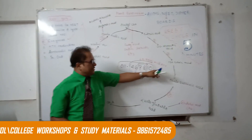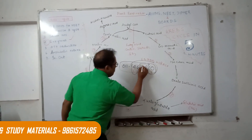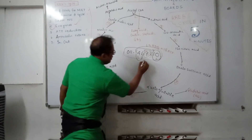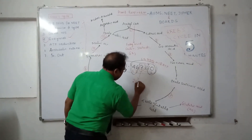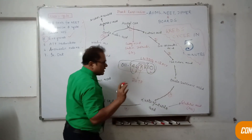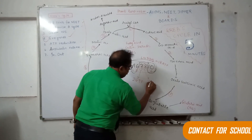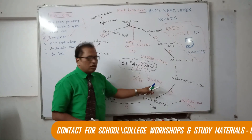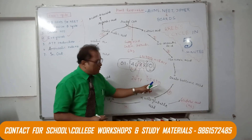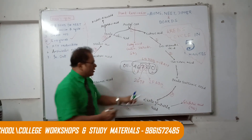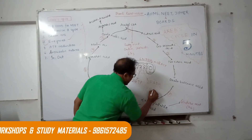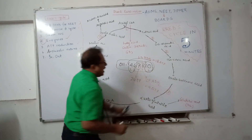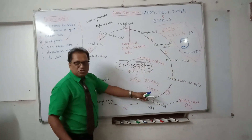Since one NADH2 equals 3 ATP, six NADH2 gives us 18 ATP. Now coming to step 8 and step 7: in step 7, two GTP are formed (equivalent to 2 ATP), and in step 8, two FADH2 are formed. Since one FADH2 equals 2 ATP, two FADH2 gives 4 ATP.